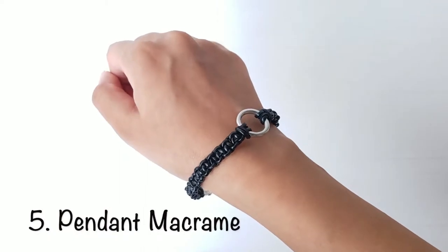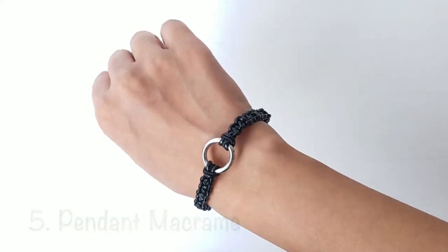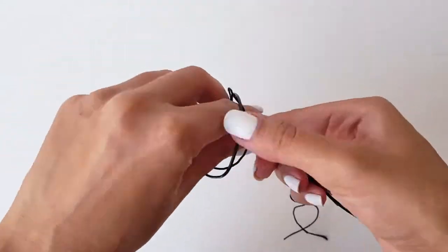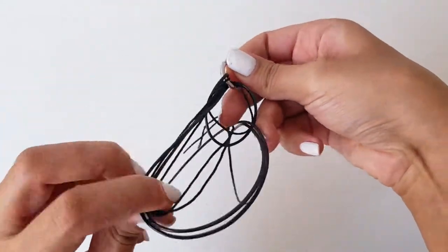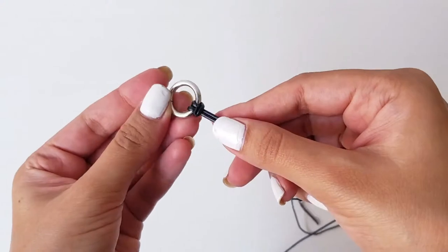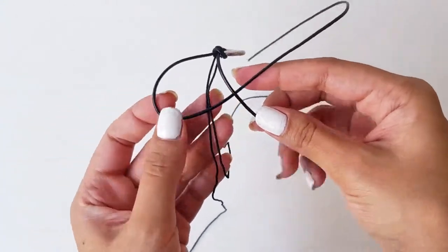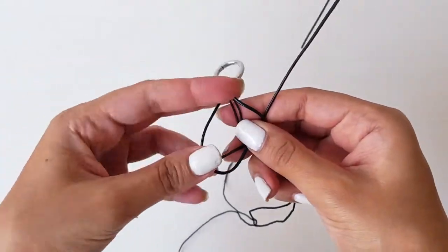Last but not least, to make this bracelet take a ring and insert two strands of wire to create a knot as seen here. Now take the left strand and put it over the center strands and then take the right one and pull it through the loop from the bottom.